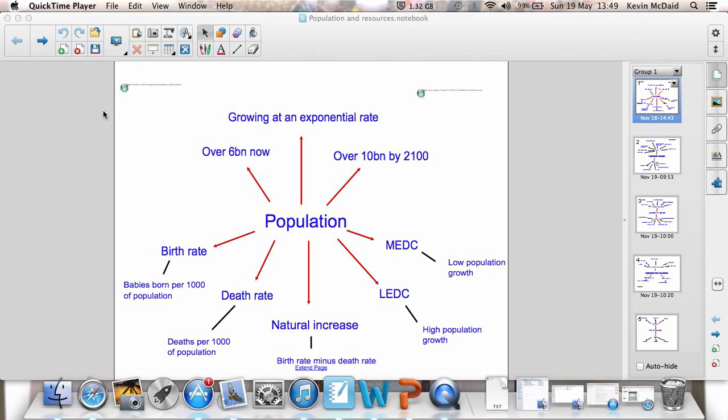Key things to remember: birth rate, death rate, and natural increase. Birth rate is babies born per thousand, death rate is deaths per thousand of the population. We say per thousand of the population so we can easily compare countries. Natural increase is a simple sum. It's the birth rate minus the death rate.